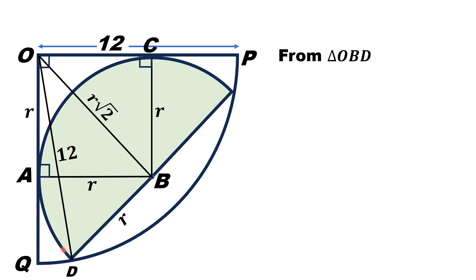We will get from this triangle by Pythagorean theorem, this term squared plus this r squared is equal to 12 squared, as 12 is the hypotenuse of this right triangle OBD. So from here, taking square of this term, we will get 2r² plus r² is equal to 144, and from left, 3r² is equal to 144.